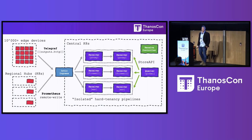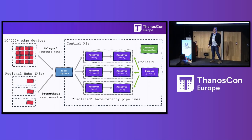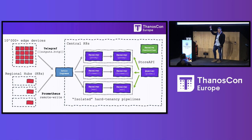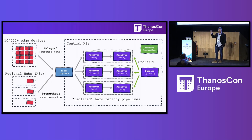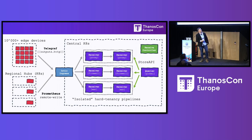Let me show you how we are configured. We have our metric sources: the edge devices — 10,000 of them around the world — and some Kubernetes clusters running Prometheus. On the hosts we have Telegraf, which is from the InfluxDB world, and this agent is doing the remote writing. Centrally, we have an Istio ingress routing stuff based on a tenant header to different hard tenancy pipelines, and a global query that plugs into all of the tenants.